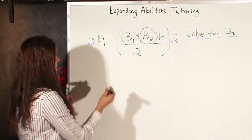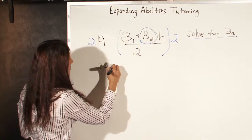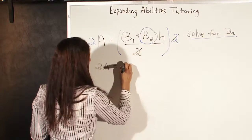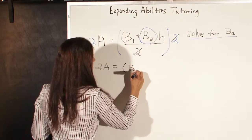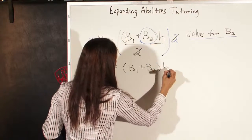So we're left with 2A equals, these 2's cancel, so we're left with on the right-hand side, B1 plus B2 times H.